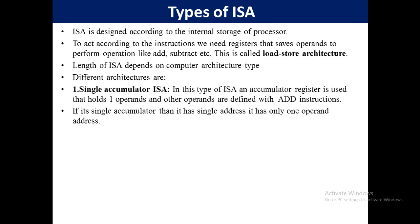The first architecture is single accumulator ISA. In this type of ISA, an accumulator register is used that holds one operand, and the other operand is defined with the add instruction. If it is a single accumulator, then it has a single address — only one operand address. So in single accumulator ISA we save only one operand in the accumulator register, while the other operand is declared with the add instruction.